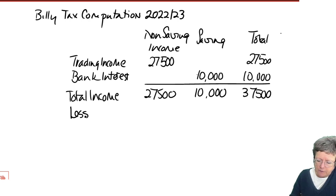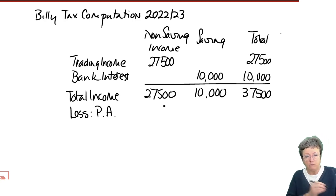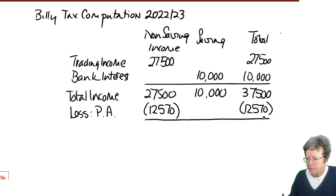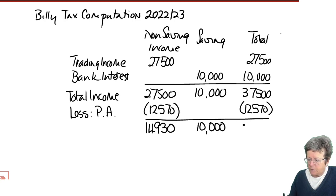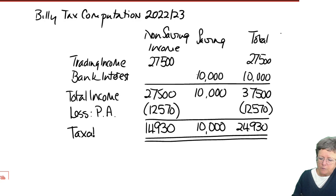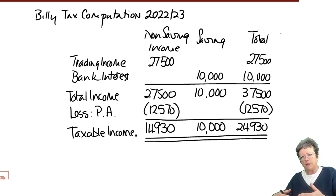What we're going to do now is deduct from that the personal allowance, which is £12,570. We've checked that in the rates, and it always comes off the non-savings income first.